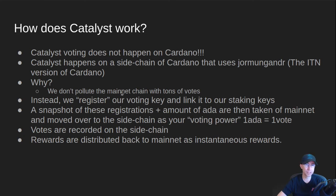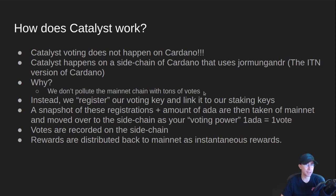Why do we do this? Mostly so we don't pollute the main chain with tons of votes and other stuff that's not going to be useful long after the vote happens. We want to know what happened and then we can just throw away all that data after we've validated what actually happened. So instead, we register a voting key on the main chain and link that to our staking key. Then they take a snapshot of those registrations and how much ADA you have staked in those staking keys, and that's moved over to the sidechain.